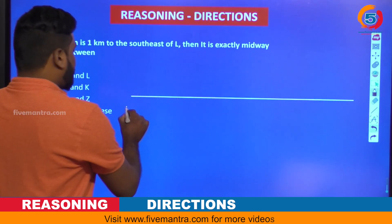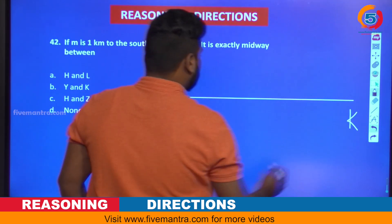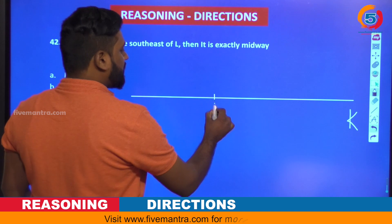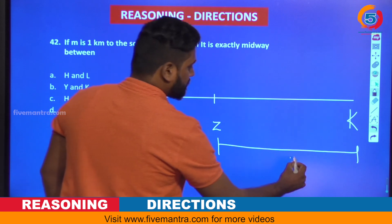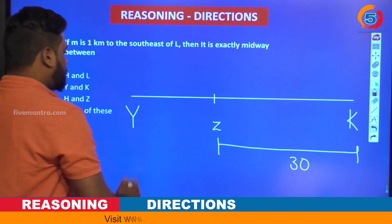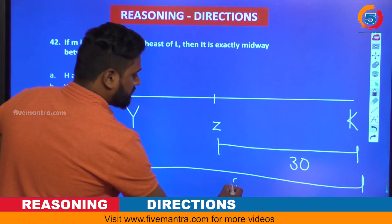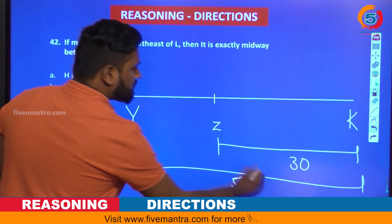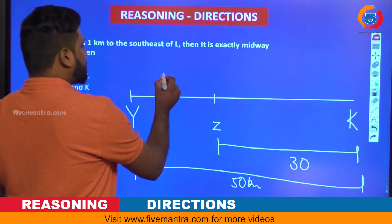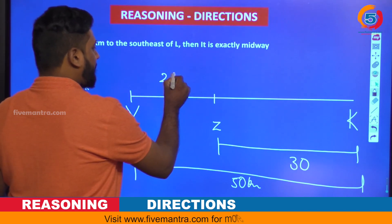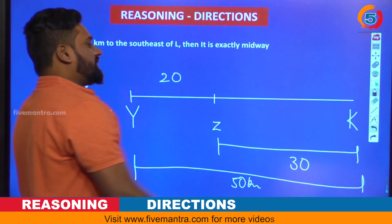This is Y and this is K. The distance between K and Z is 30 kilometers. The total distance given is 50 kilometers — from here to here, 50 kilometers. That means if you take Y and Z, this becomes 20 kilometers, because the K-to-Z distance is 30, so Y-to-Z is 20.